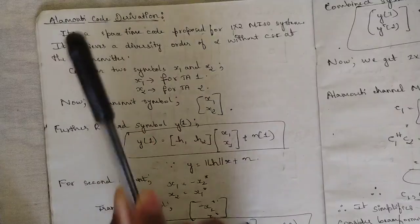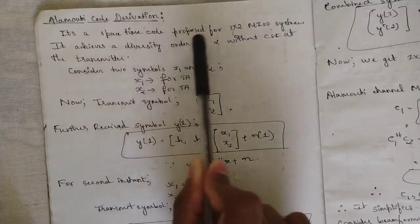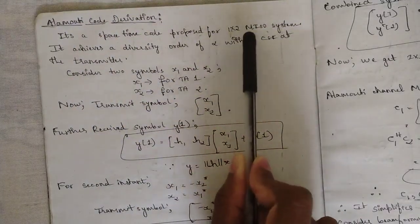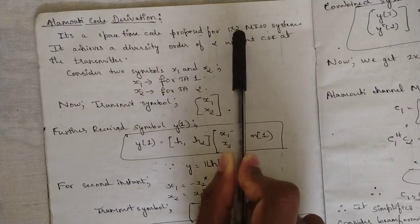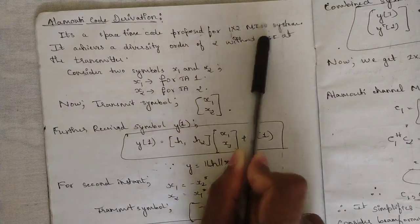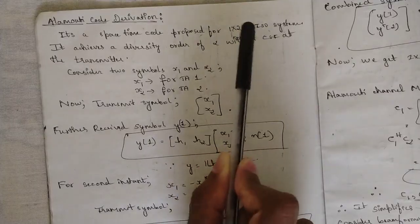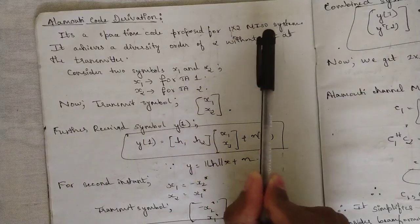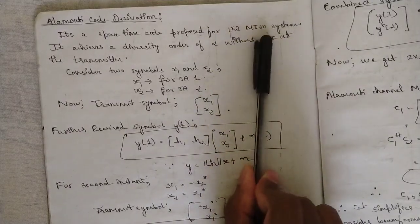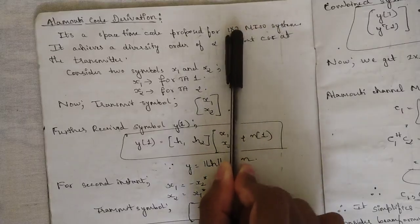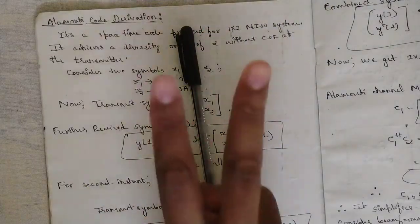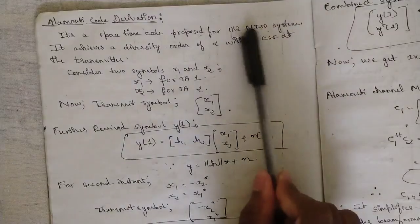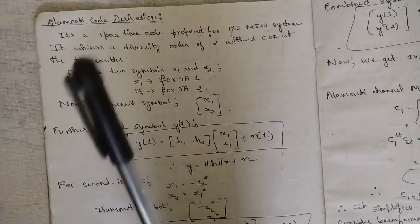What is basically an Alamouti code? It is basically a space time code proposed for a one cross two MISO system. It is only developed for a one cross two MISO system. One cross two stands for two transmitters and one receiver. Don't confuse it with one transmitter and two receivers - it consists of two transmitters and one receiver. That is why it is called a one cross two MISO system, meaning multiple input single output, with two transmitting antennas and only one receiver.